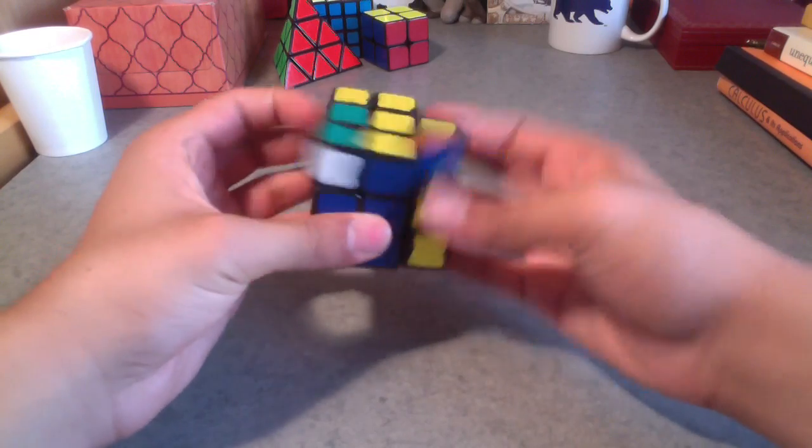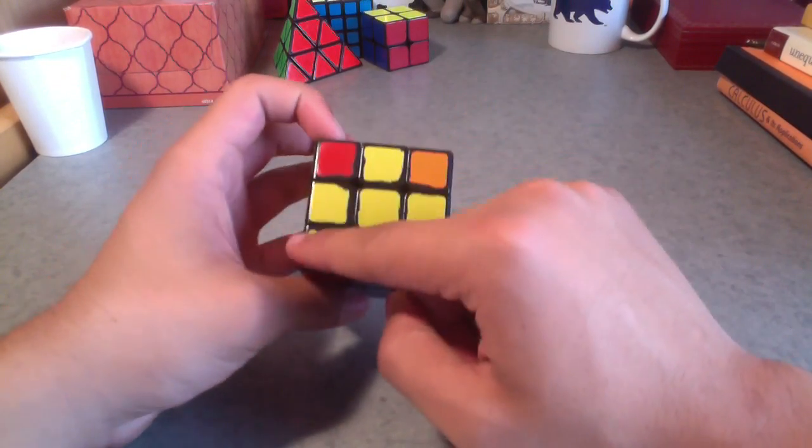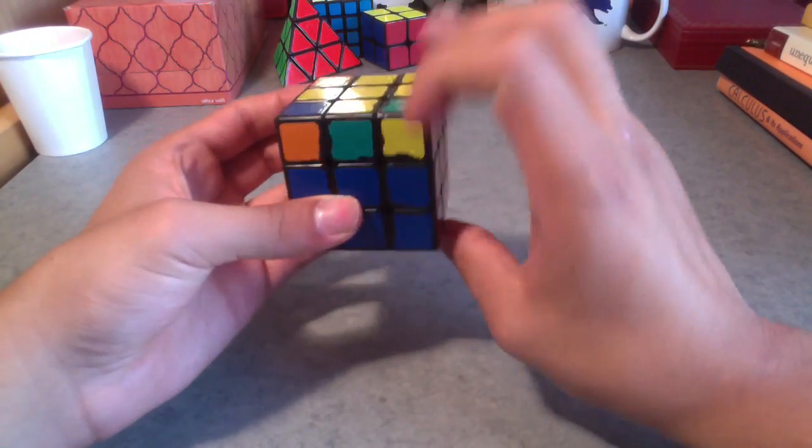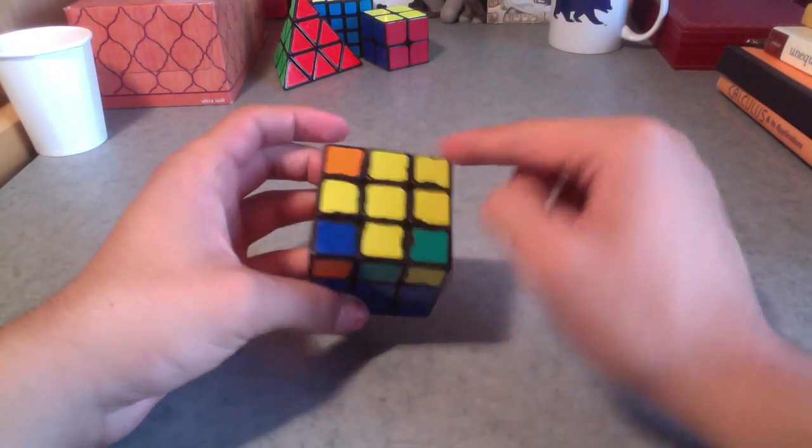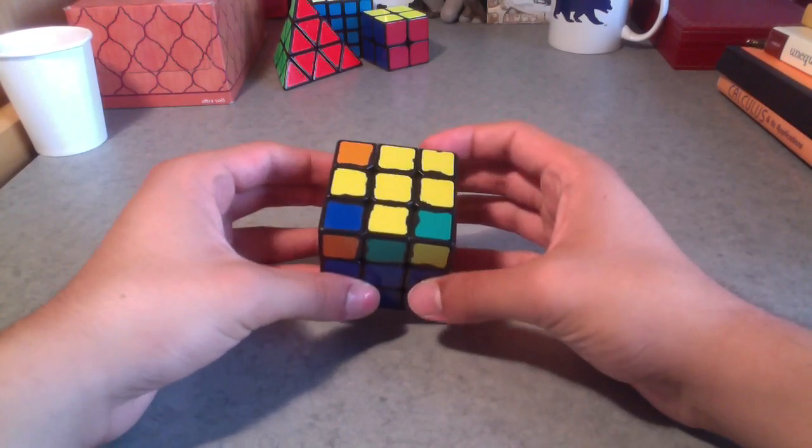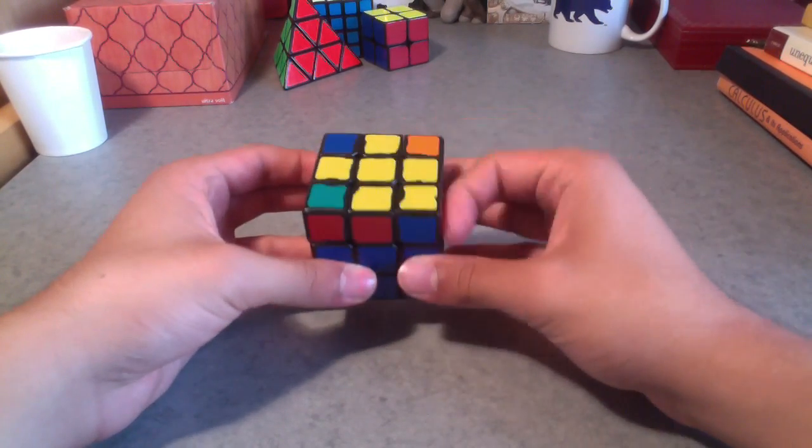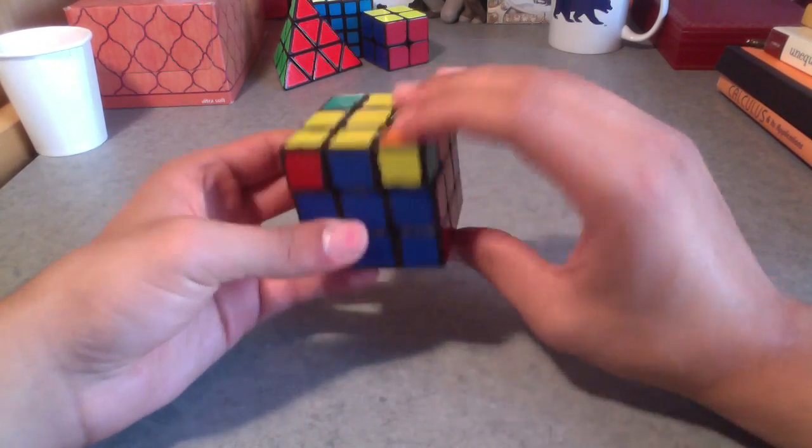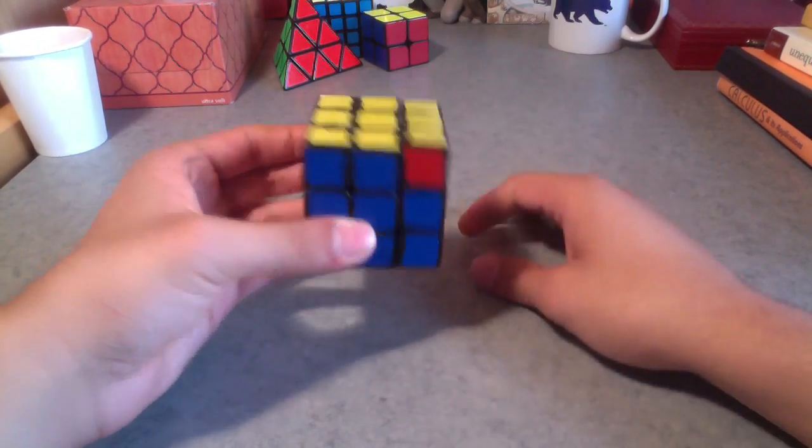There will be occasions where you have the fish, you put its head in the bottom left corner, you do the algorithm, and it's not solved. You just get a fish again. This'll happen at most once. So in this case, just realign the fish's head to be in the bottom left corner, do the algorithm, and then you'll be good.